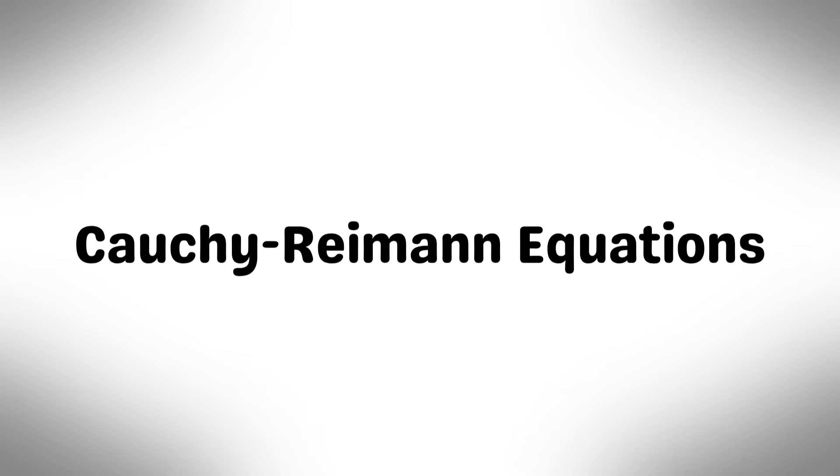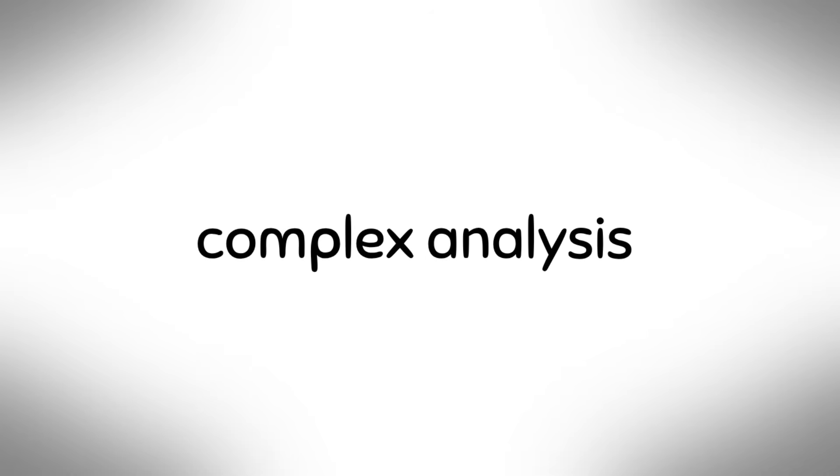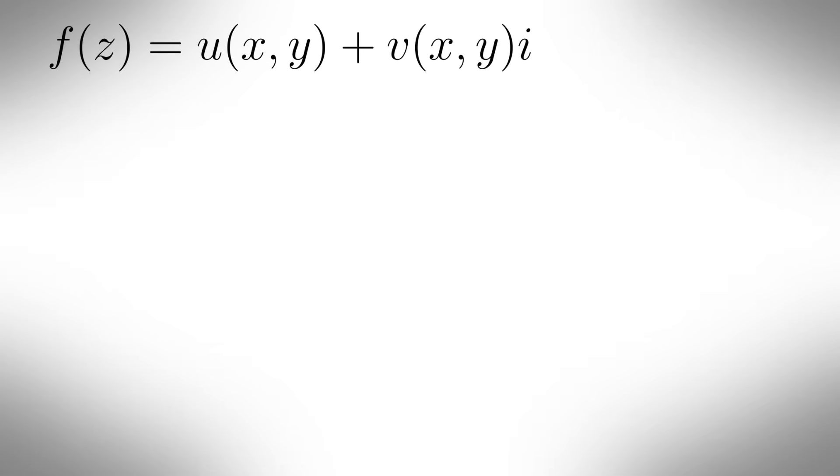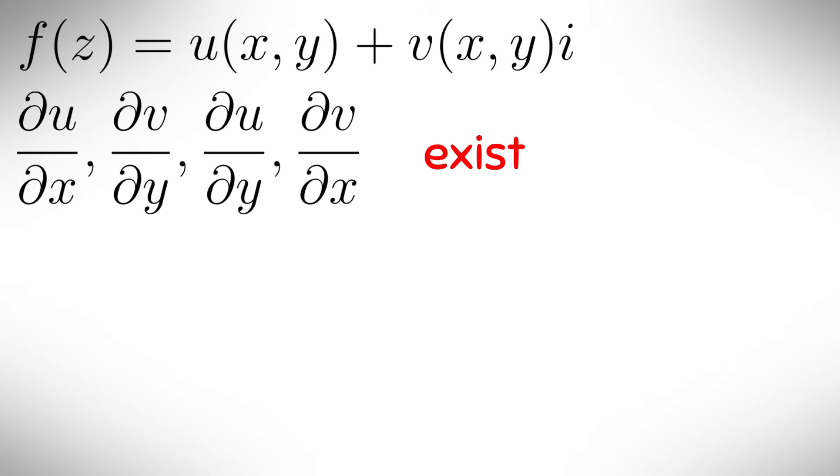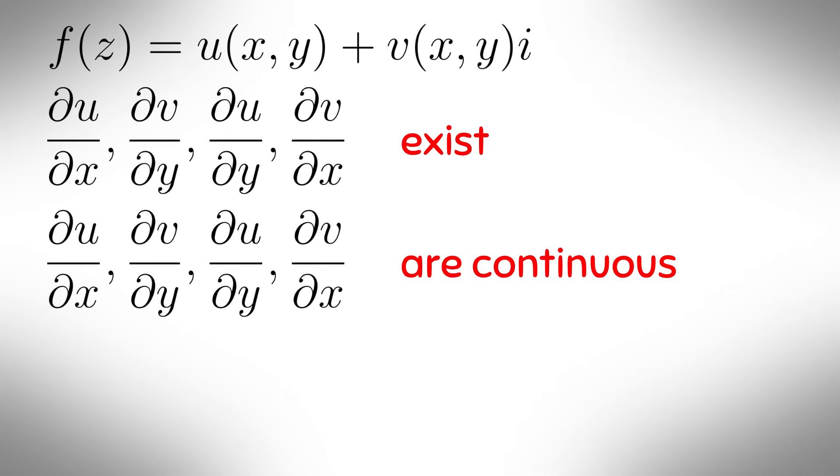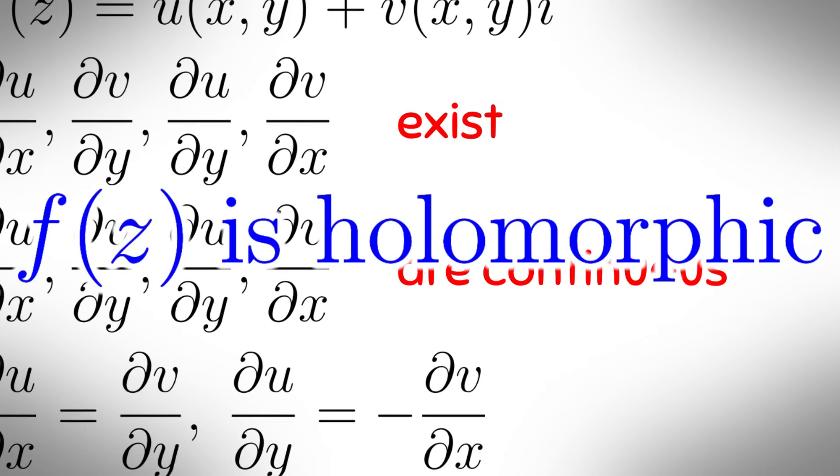Cauchy-Riemann Equations. This is to do with complex analysis and it helps us to find whether a function is holomorphic or not. If we have a complex function f of z equals u of x and y plus v of x and y lots of i, then if all the partial derivatives exist and are continuous and they satisfy the Cauchy-Riemann equations, then f of z is holomorphic, which means it's infinitely differentiable.